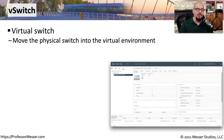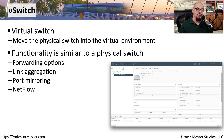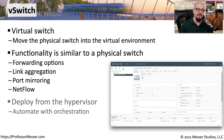Now that we know where all of our virtual machines are located and the device that is managing those virtual machines, we need to have a network that connects all of those virtual machines together. We connect that through a vSwitch, or a virtual switch. We're simply taking the physical switch that we used to have and we've moved it into the virtual world. We can still do all of the things we used to do on our physical switch — setting forwarding options, configuring link aggregation between different virtual switches and different servers, port mirroring and NetFlow to provide additional management capabilities. Deploying one of these virtual switches from the hypervisor is simple — you simply drag and drop or click a button. This can also be automated through the hypervisor's API so that it can be deployed and removed automatically using orchestration.